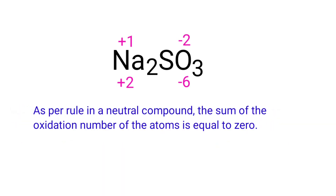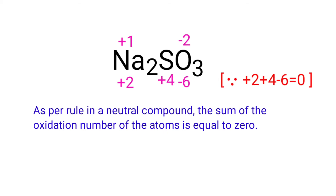As per the rule, in a neutral compound the sum of the oxidation numbers of the atoms is equal to 0, so the numbers along the bottom must add up to 0. Therefore, the number under S must be plus 4, so the oxidation state of sulfur is plus 4.